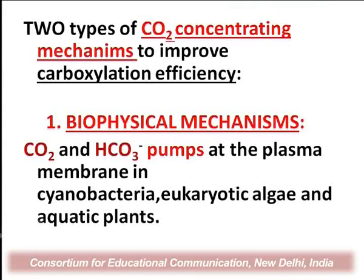If these bicarbonate ions could be given in the vicinity of Rubisco, then the oxygenation property of Rubisco could be curtailed, and as a result reduced photorespiration would eventually lead to an increase in productivity — because that is the most imperative point. Nature has engineered basically two types of carbon dioxide concentrating mechanisms, done with the view to improve carboxylation efficiency vis-à-vis oxygenation efficiency: the biophysical mechanisms and the biochemical mechanisms.